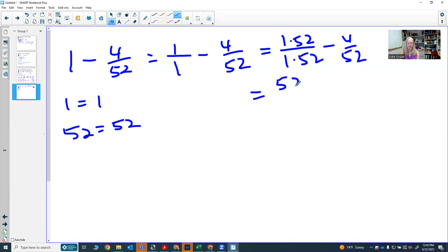That gives me 52 over 52 minus 4 over 52. And that will get us 48 out of 52.